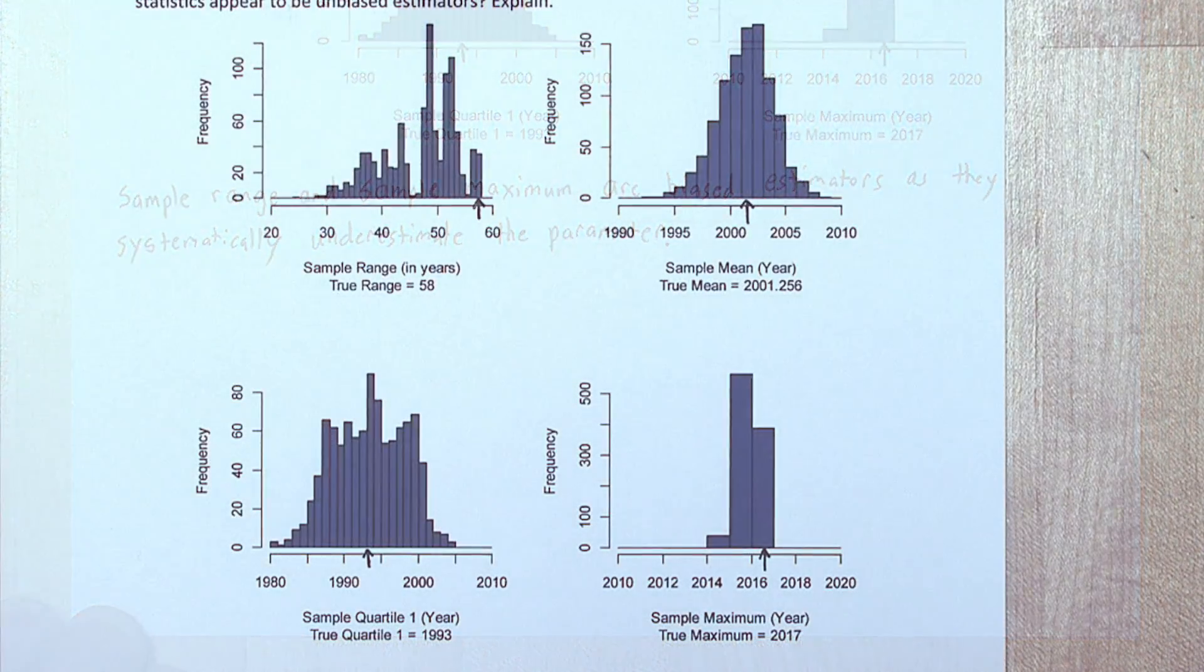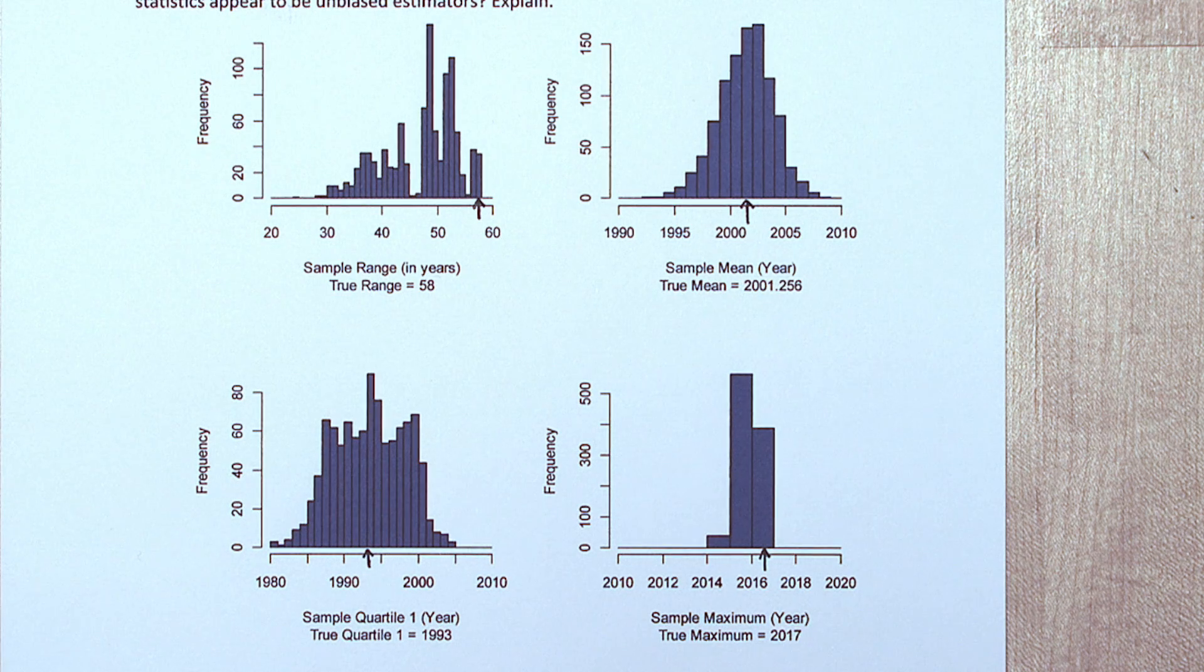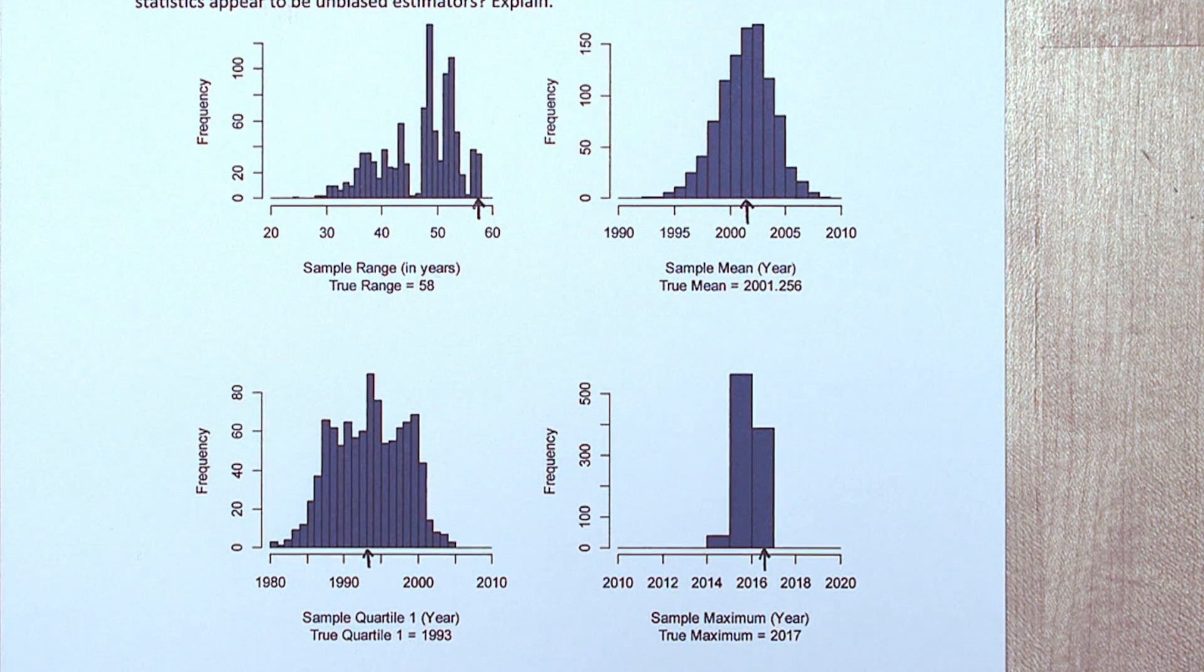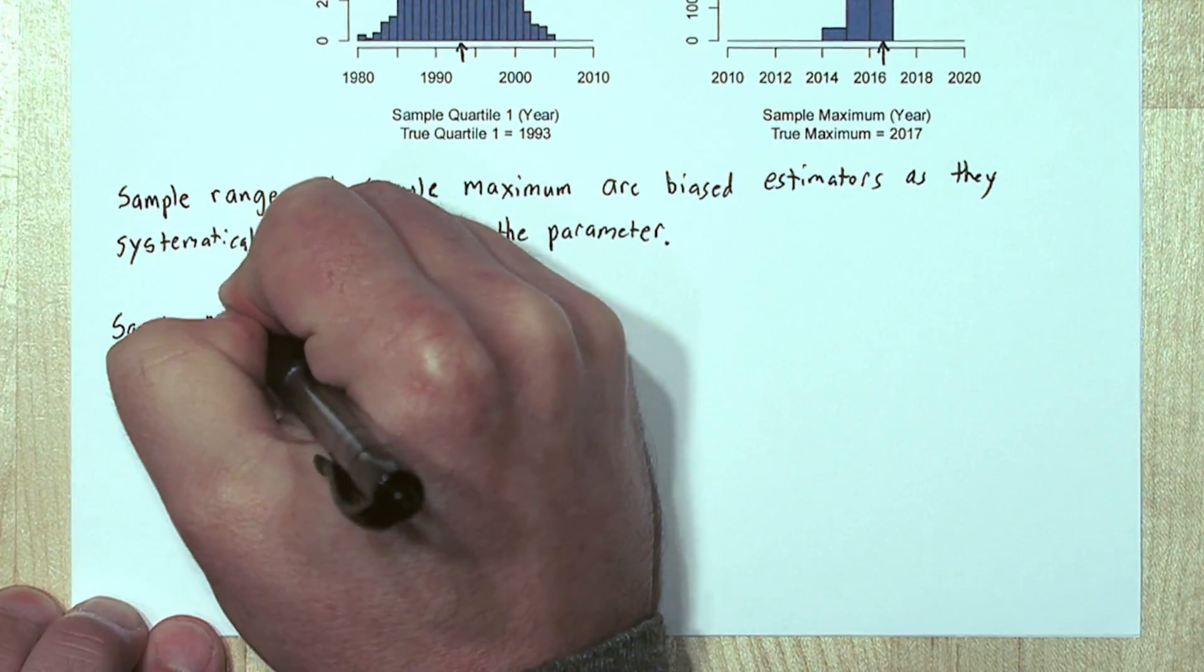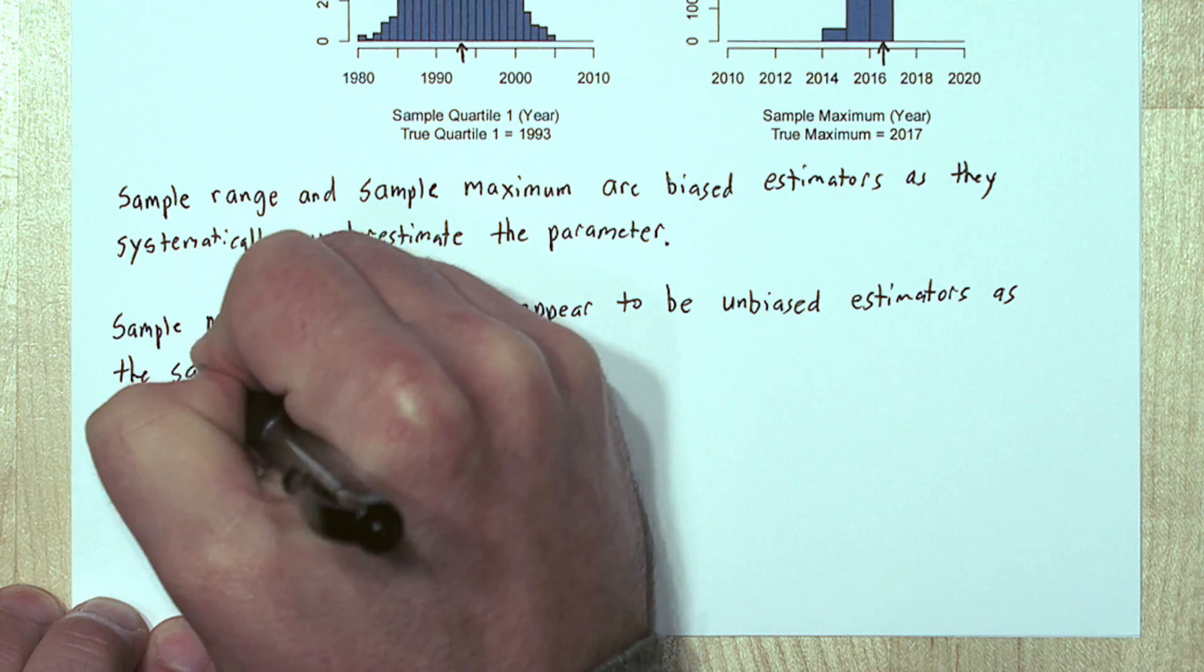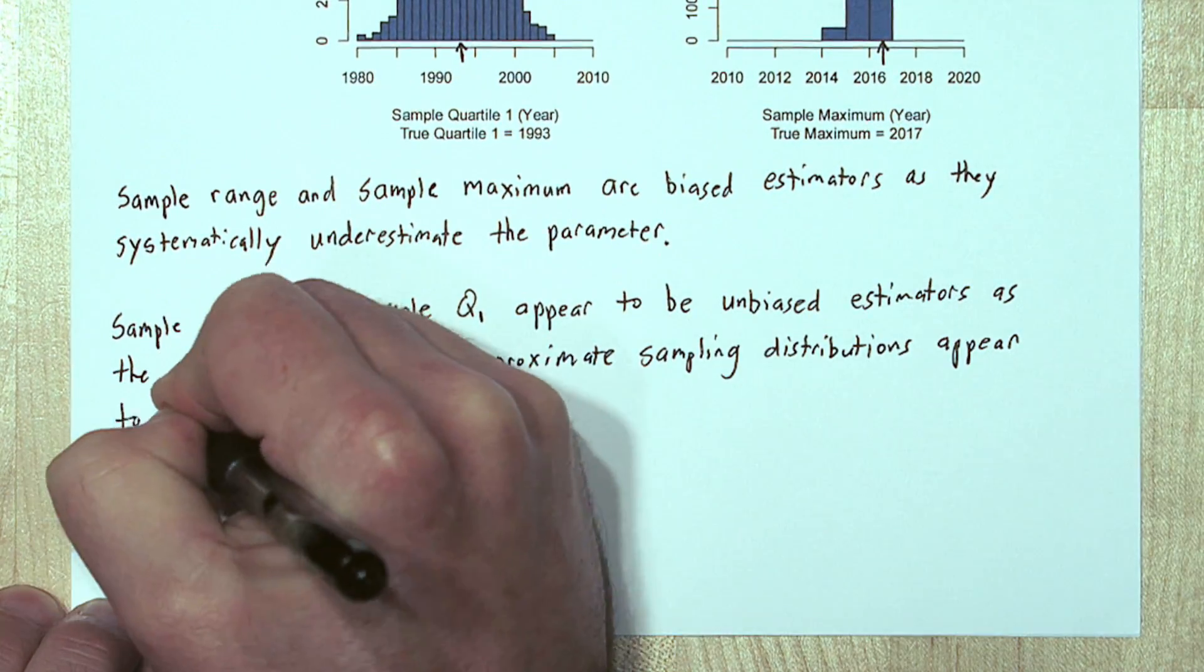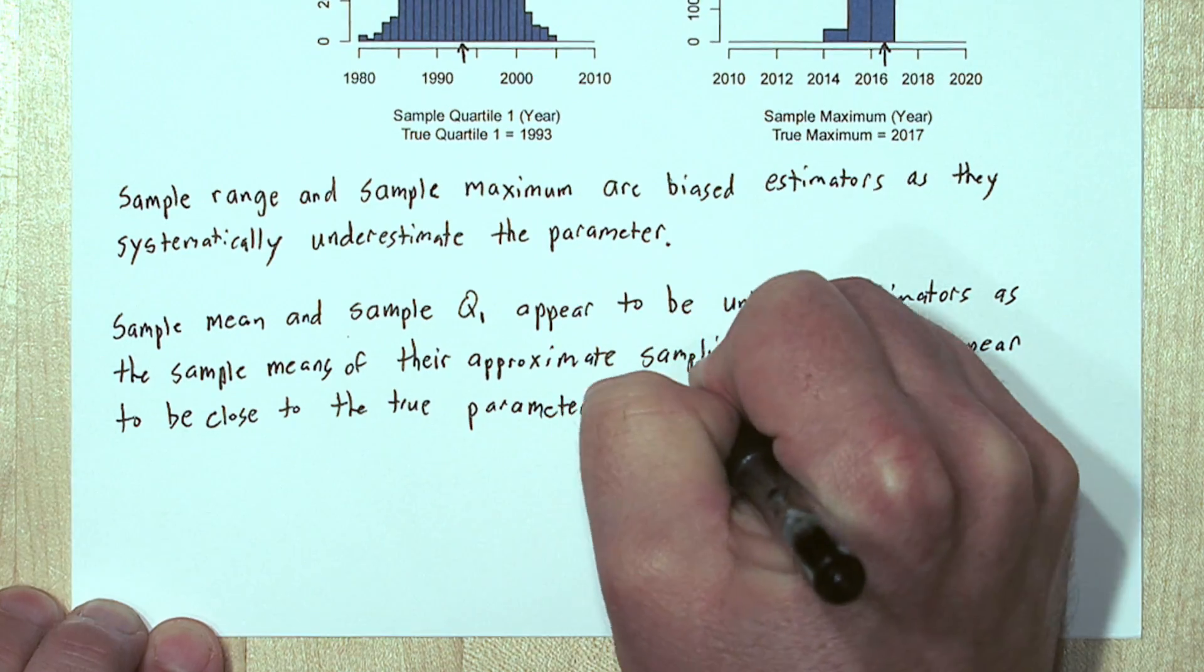Now notice for sample mean and sample quartile 1, the sampling distributions are approximately balanced at the true parameter value. That means the mean of these approximate sampling distributions is pretty close to the true parameter value. So sample mean and sample quartile 1 appear to be unbiased estimators, as the means of their approximate sampling distributions appear to be close to the true parameter values.